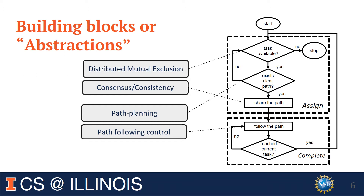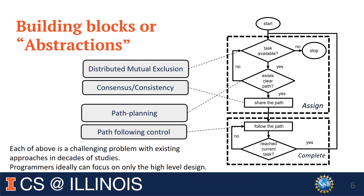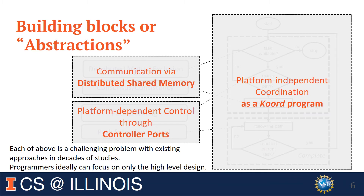Each of these topics is a challenging research problem studied over decades. Ideally, the programmer will want to focus only on designing the high-level algorithm of this flowchart. This flowchart is platform-independent and should work with any vehicle that provides proper abstractions for path planning and path following. So in our work, we design this high-level algorithm using our programming language, CORD, and the platform-dependent controls are abstracted as controller ports, with distributed shared memory used for communication.